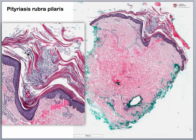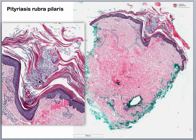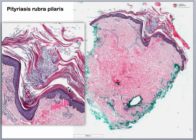We're seeing that it's both in the horizontal plane — para, ortho, para, ortho — as well as in the vertical plane — para, ortho, para. This is what we call the checkerboard pattern of ortho and parakeratosis that we see in pityriasis rubra pilaris.